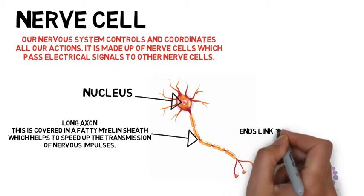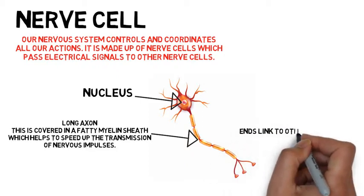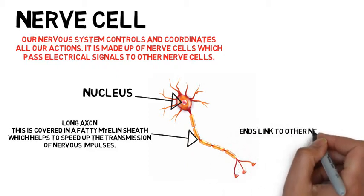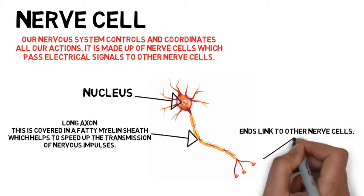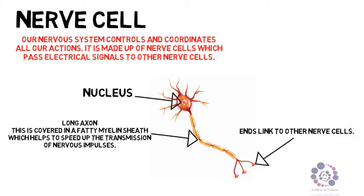Finally, at the ends, these ends link to other nerve cells to ensure the transmission of signals to the correct place.